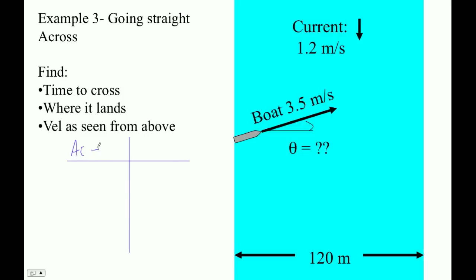So we've got the across direction, we've got downstream, and we've got displacement, velocity, and time. Across is still 120 meters. And here's the deal: we've got the current, and we're going to have an upstream component on this.